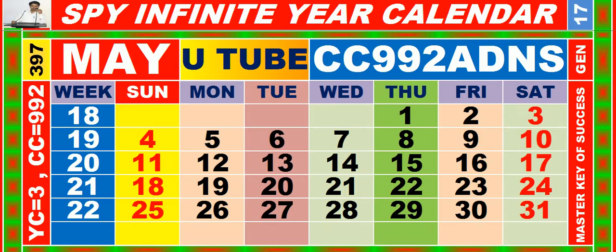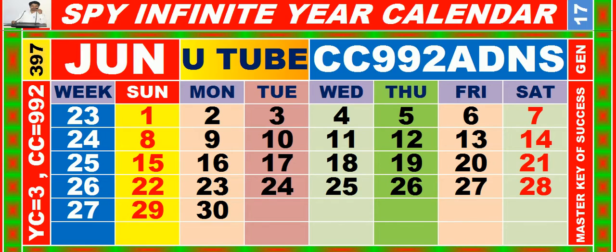Calendar for the month of May, having calendar code equal to 9-9-2. Calendar for the month of June, having calendar code equal to 9-9-2.